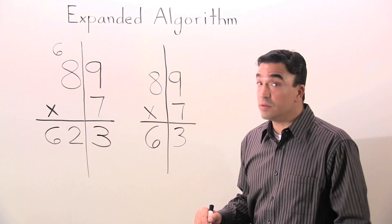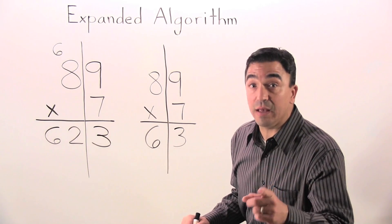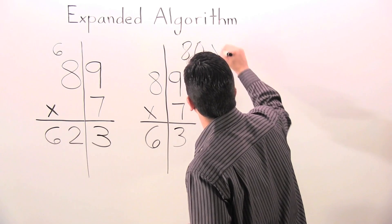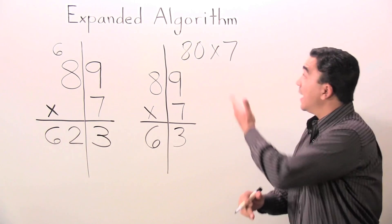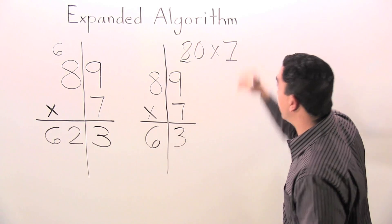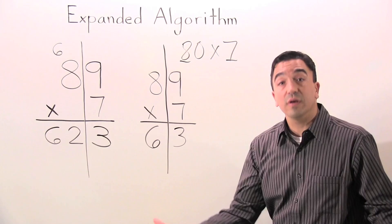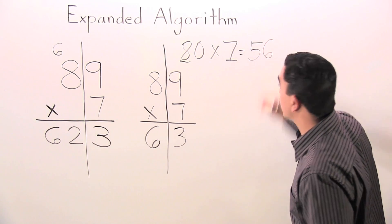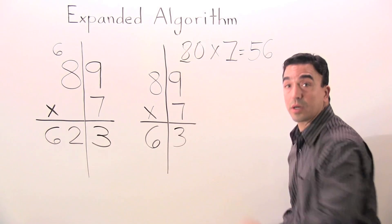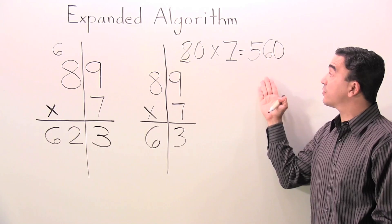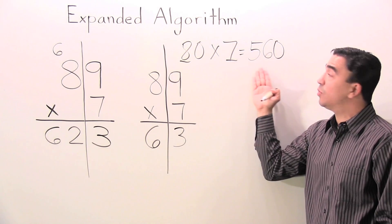7 times 8. No, 7 times 80. Let's do a little mental math. 80 times 7. We're going to multiply 8 times 7, which is 56. Grab our 0. Put it after the 56. So 80 times 7 equals 560.